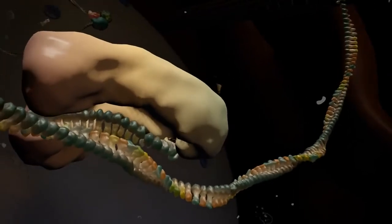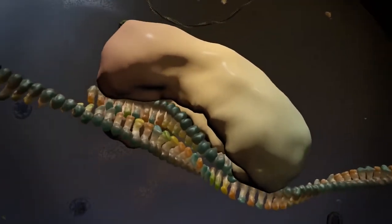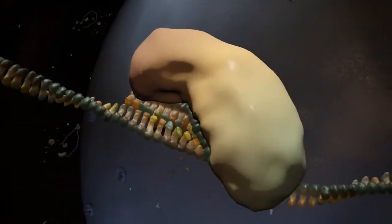MicroRNAs also guide RISC to messenger RNAs. Usually only part of a microRNA, known as the seed, pairs with a target messenger RNA.